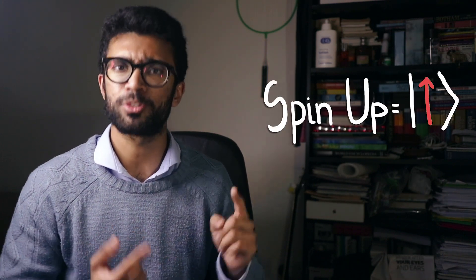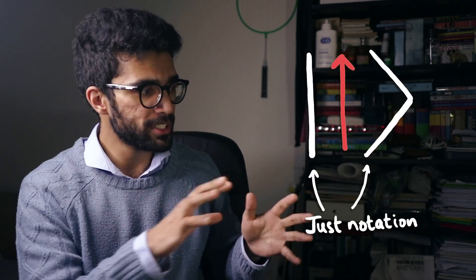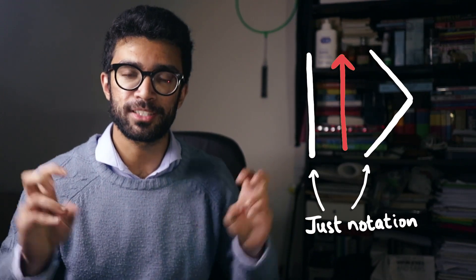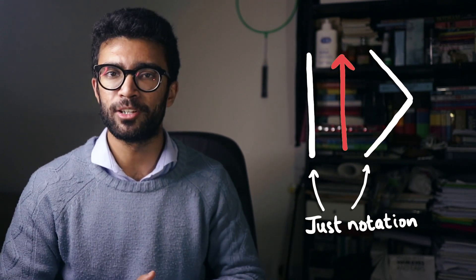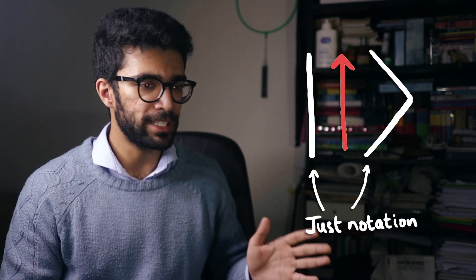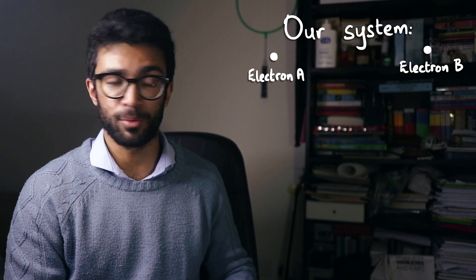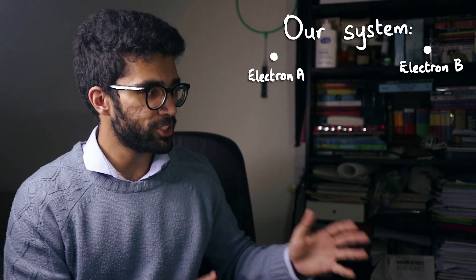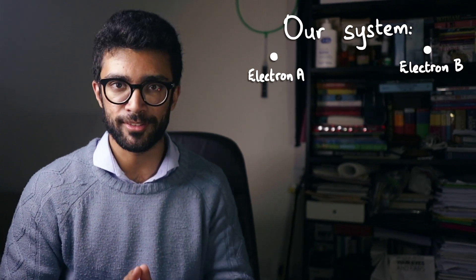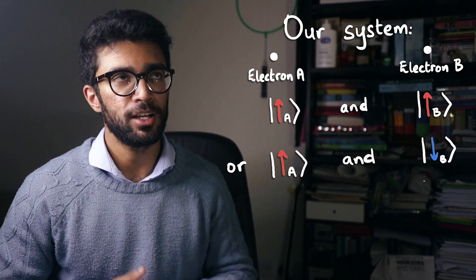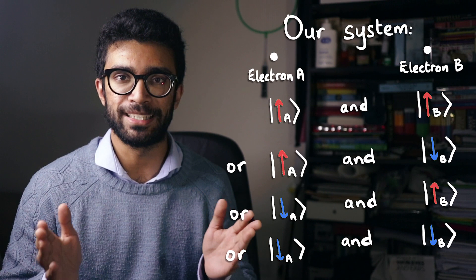So when we consider our system of two electrons, all we care about is the spin of each electron. Electrons can take one of two spins — we call it spin up or spin down, represented like this. The pointed bracket on the right-hand side and the straight line on the left-hand side is just a notation thing, a way of representing these quantum states. For now, all we care about is the arrow pointing upwards representing spin up and the arrow pointing downwards representing spin down. We label our two electrons particle A and particle B. If we measure the spins of both electrons, we would find one of four possible combinations: A up and B up, A up and B down, A down and B up, or both in the spin down orientation.